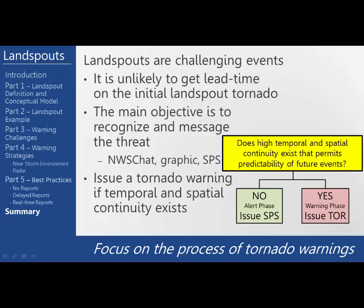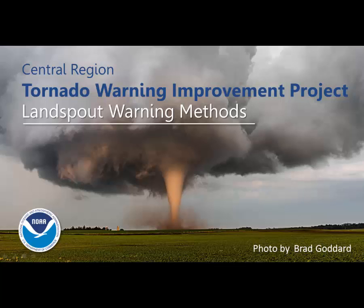The bottom line is every event is different, not just in terms of weather data, but other information like reports. In the four scenarios we just went through from the same event, two of them did not have a tornado warning and two of them did. That's the reality of the world we live in. However, the key is that we have used the same scientific reasoning for each scenario to decide what to issue. If we do that, then every event will be successful. Thank you for watching and please pass along any questions or comments to your local TWIP liaison.